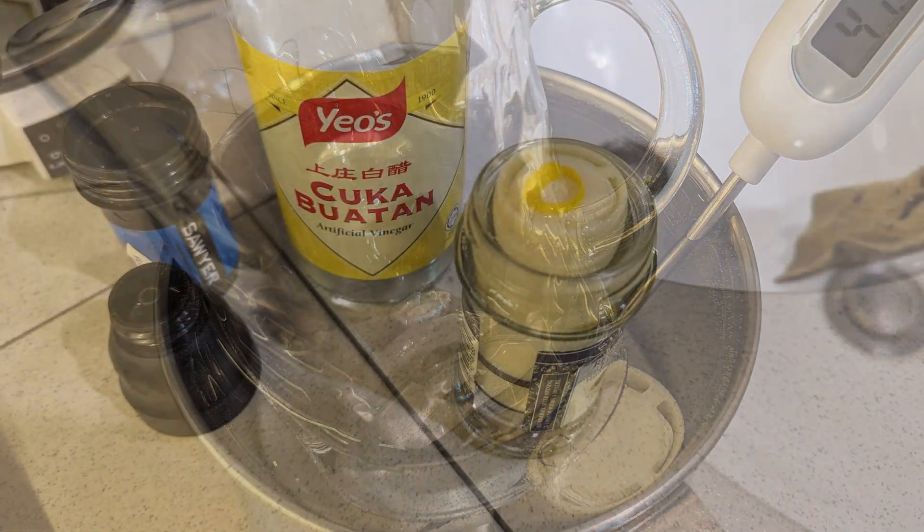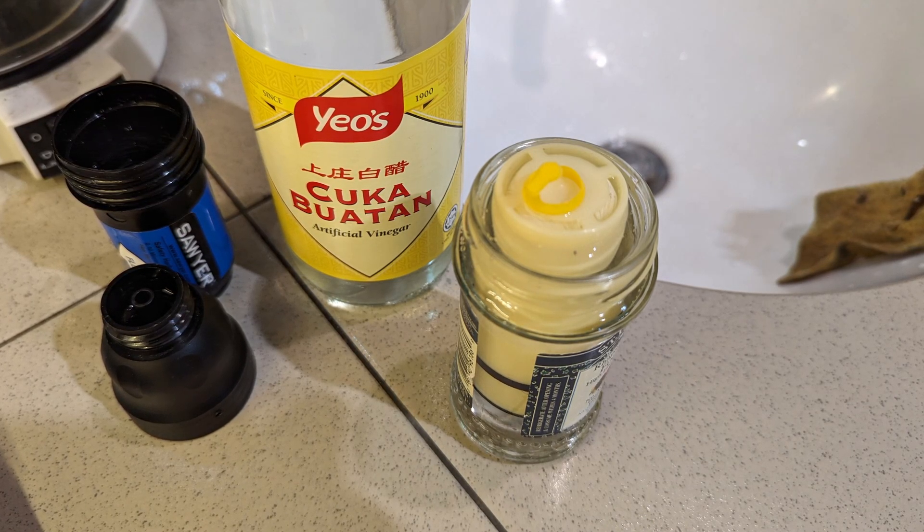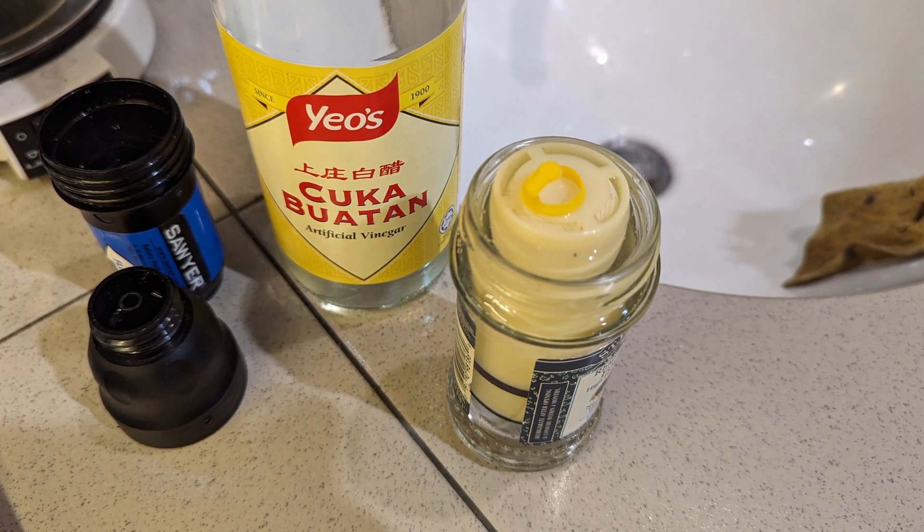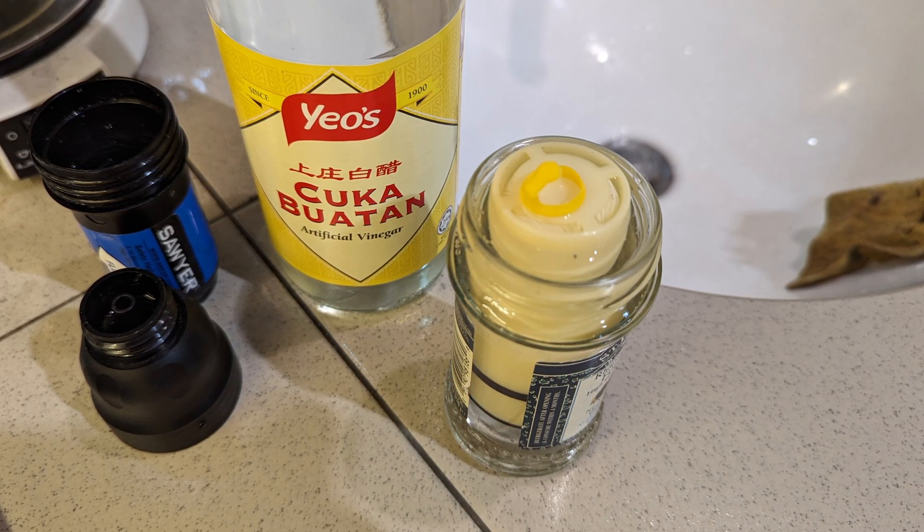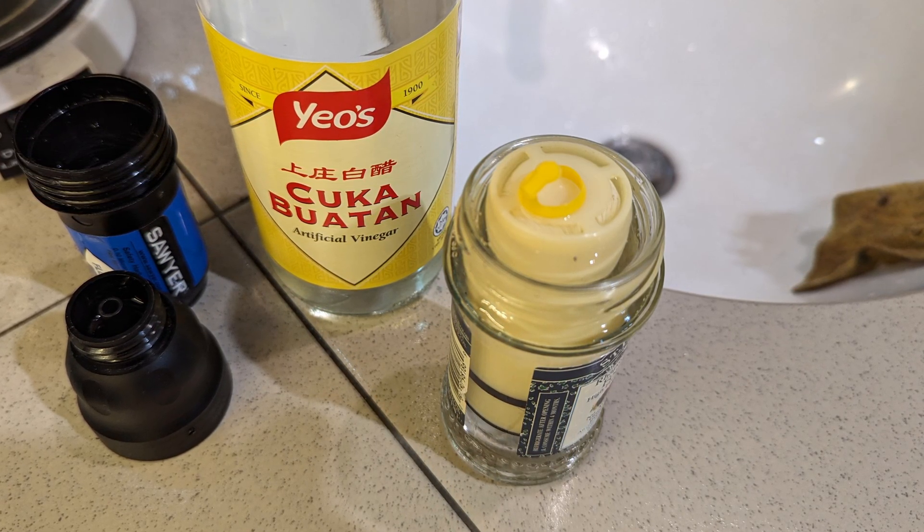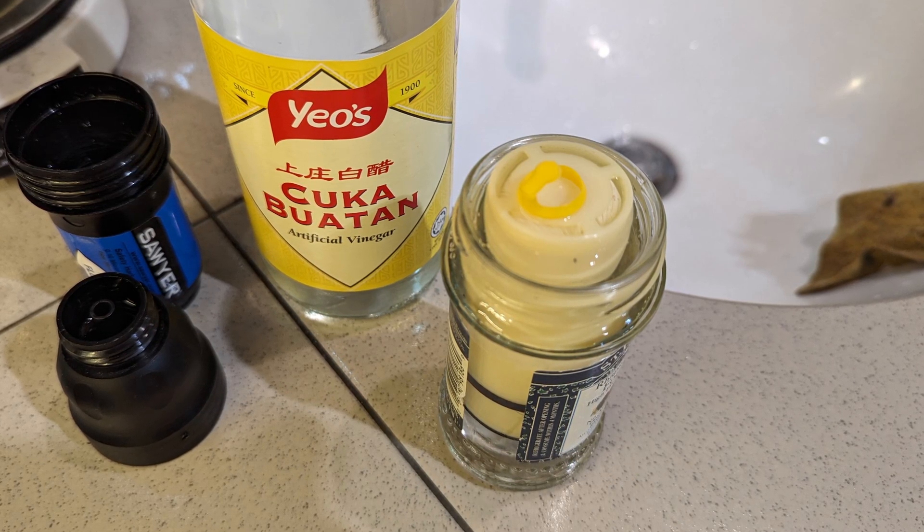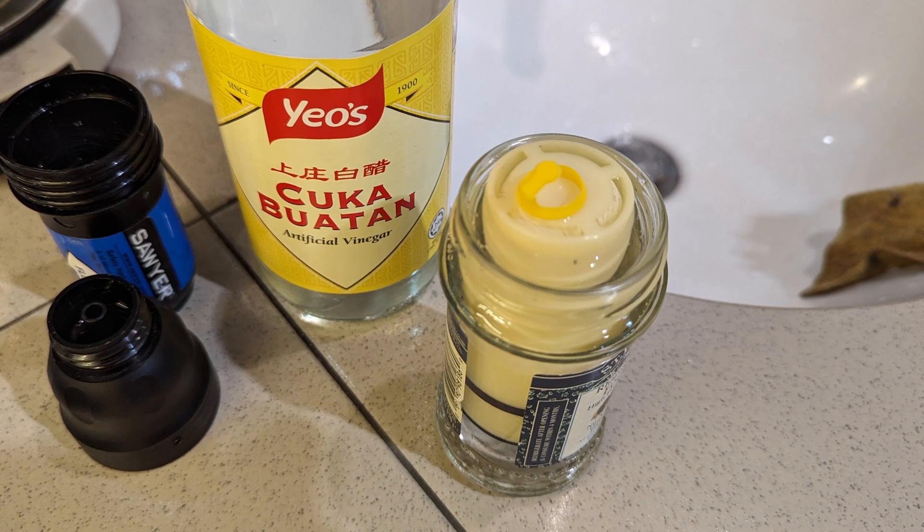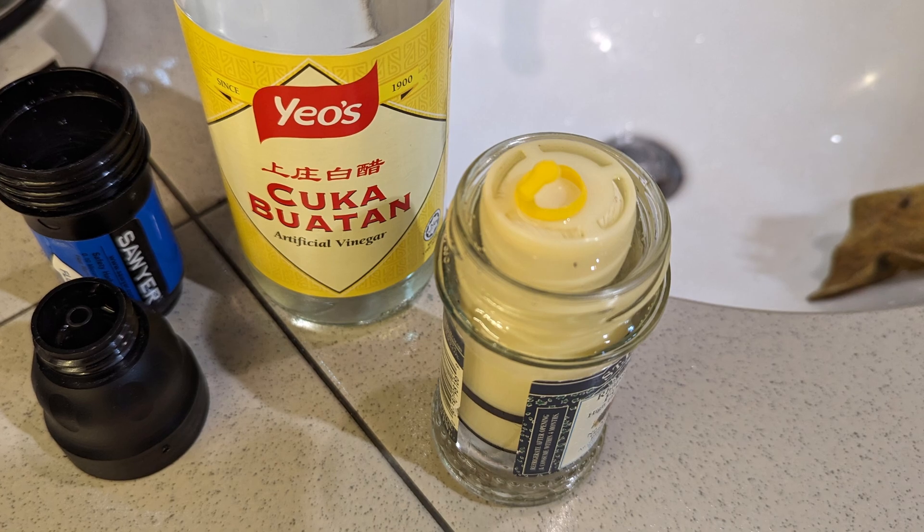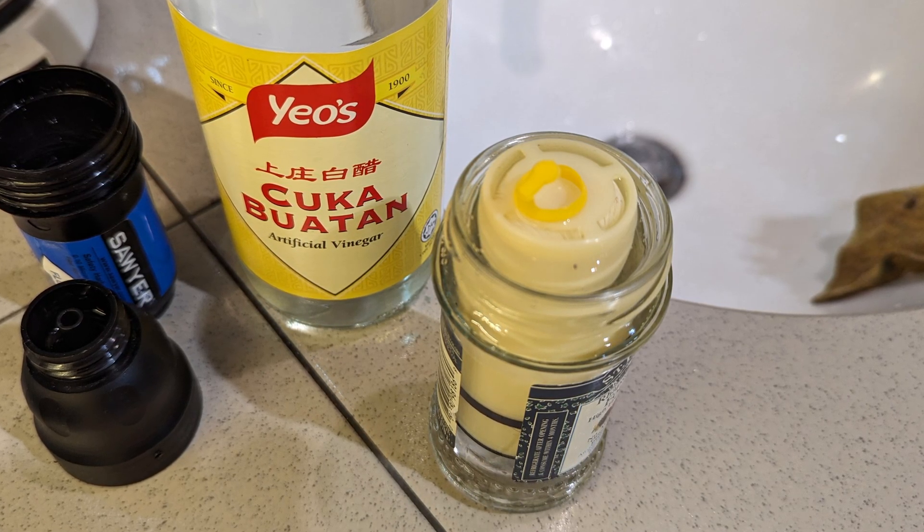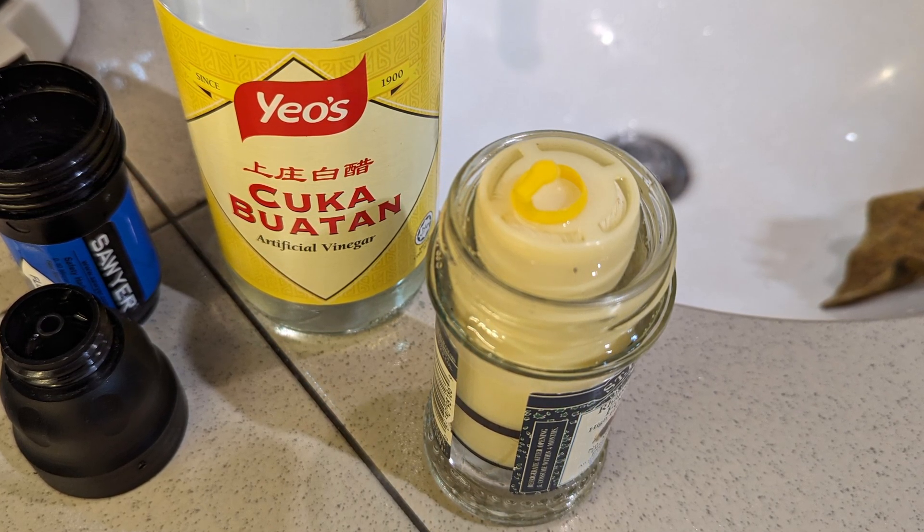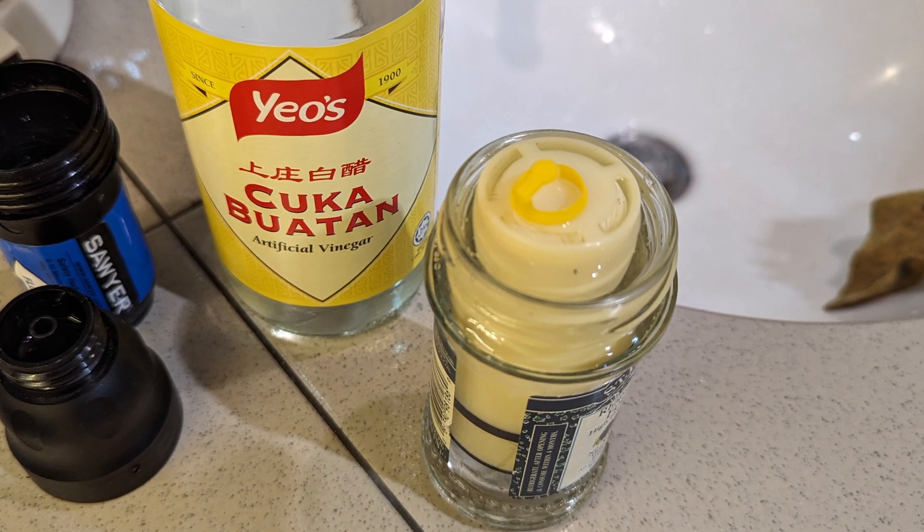Now we're moving on to the vinegar soak or the acid soak. If you want to minimize the amount of acid used, find a bottle or something that closely fits your filter. Like you can see here, I'm using a St. Dalfour jam bottle and the cartridge fits neatly inside, so the amount of vinegar needed to fully submerge the filter would be as little as possible.